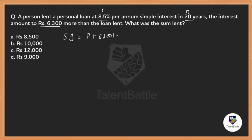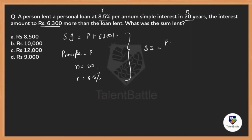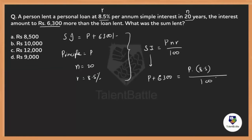We don't know the principal amount, so let the principal be P. Number of years n = 20, rate of interest = 8.5%. Using the simple interest formula: SI = (P × n × r) / 100. Substituting values: P + 6300 = P × 8.5 × 20 / 100.